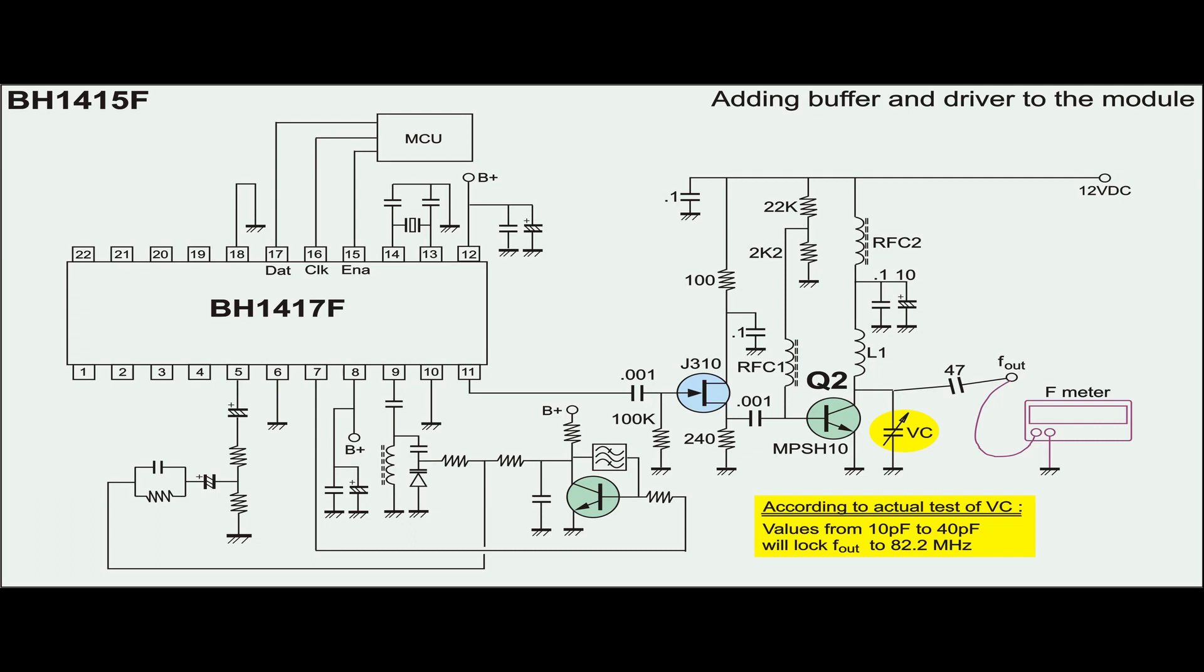The value of VC is found to be from 10 to 40 pF in order to lock Q2 to 88.2 MHz.